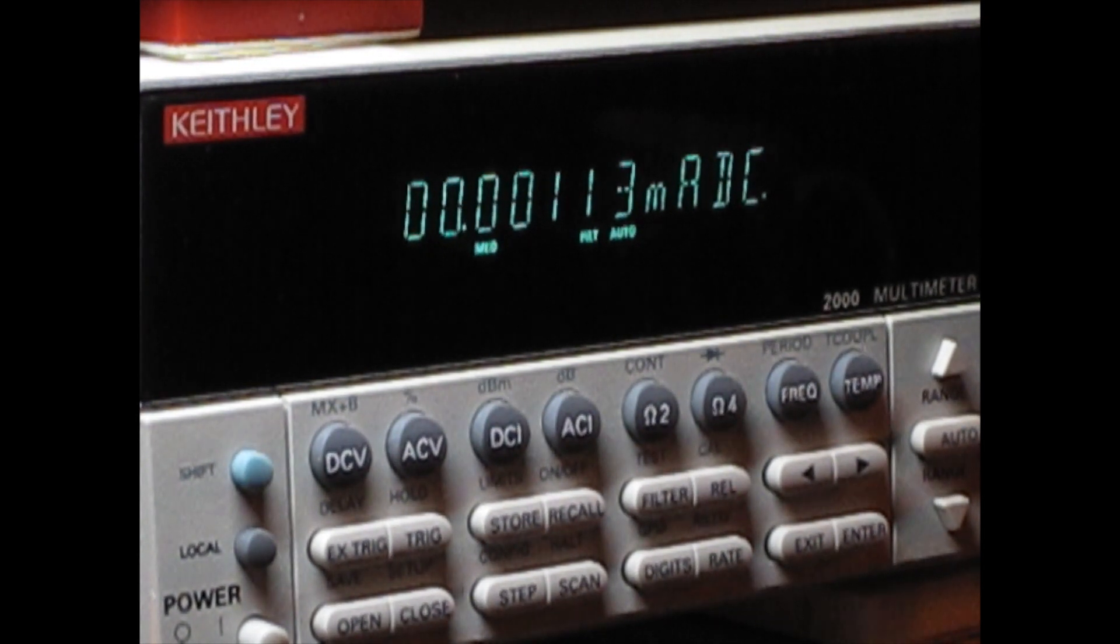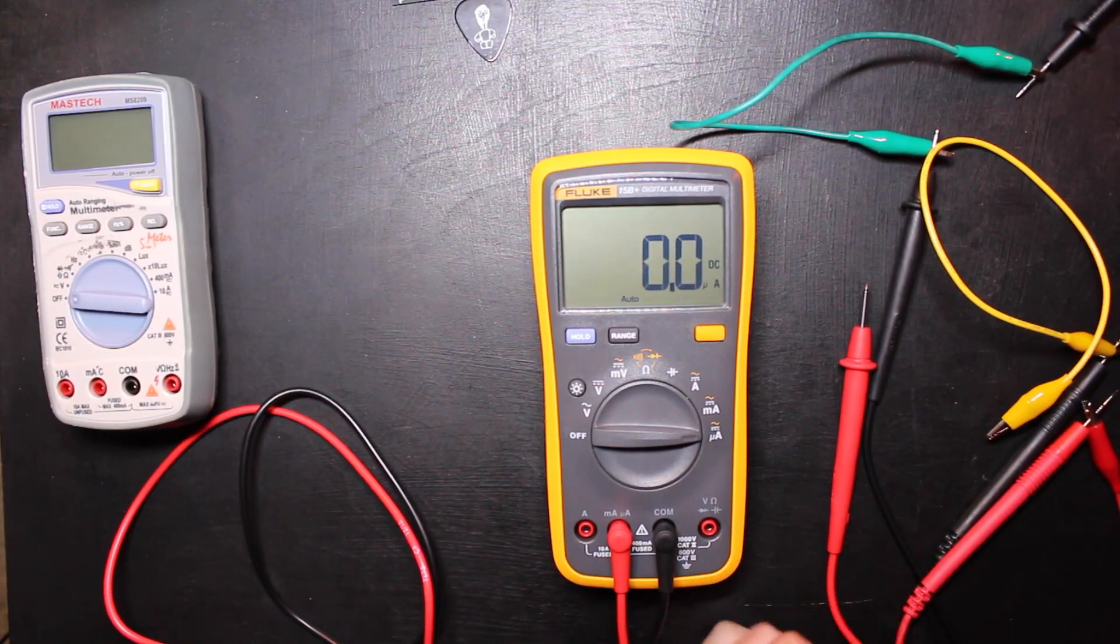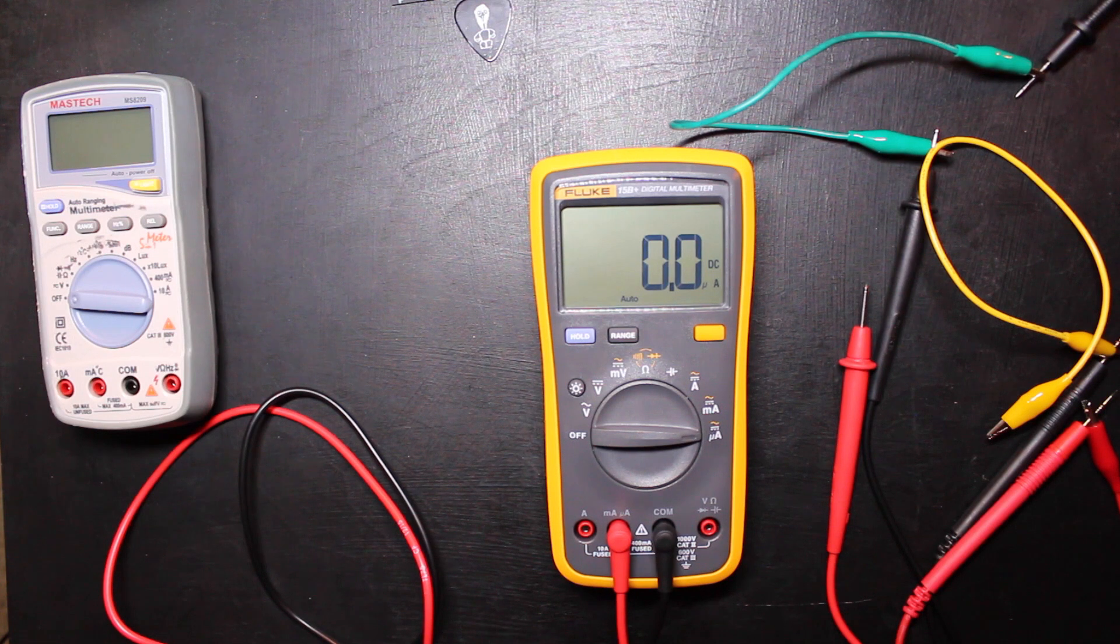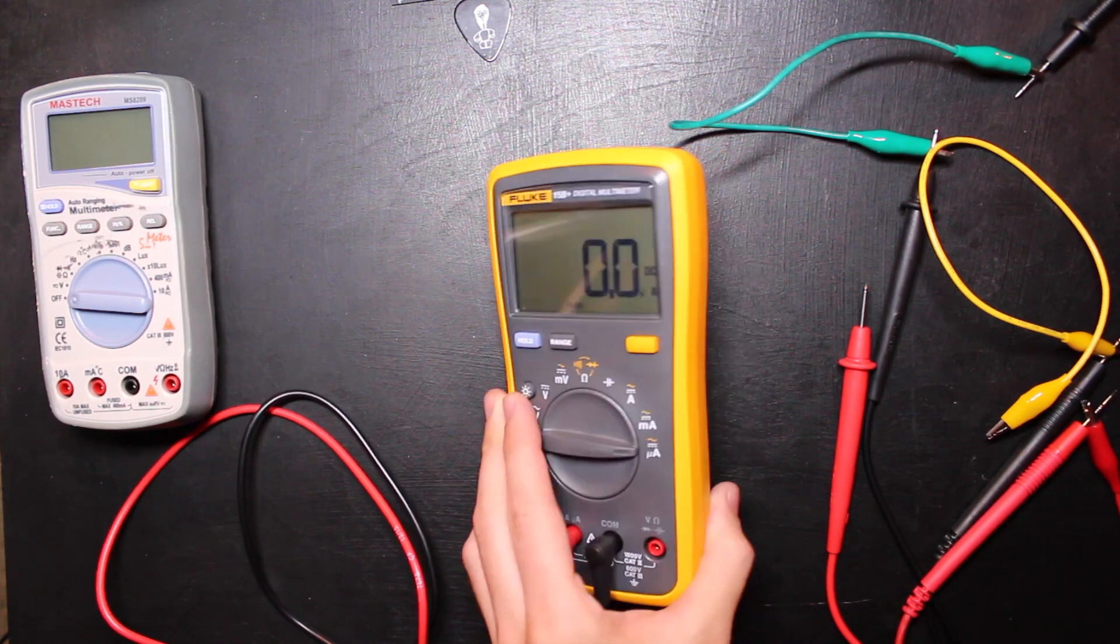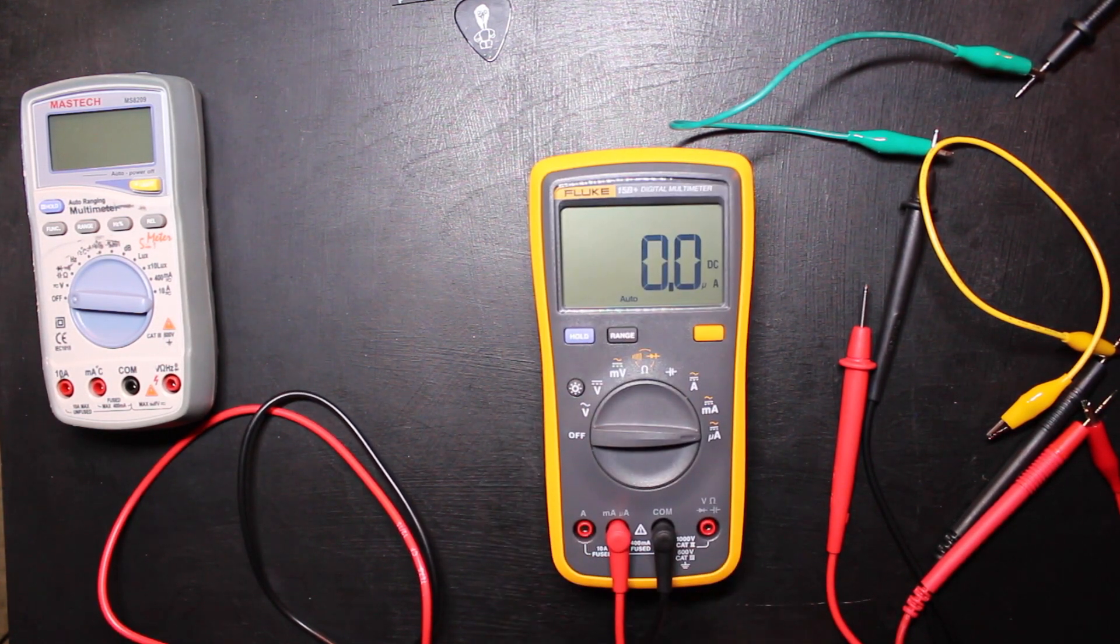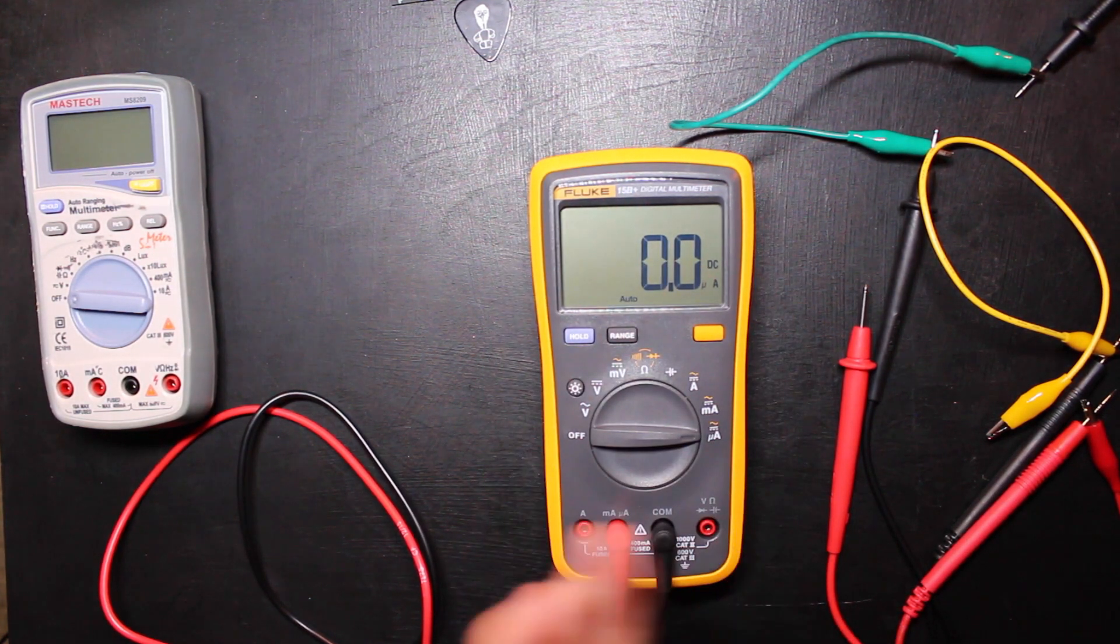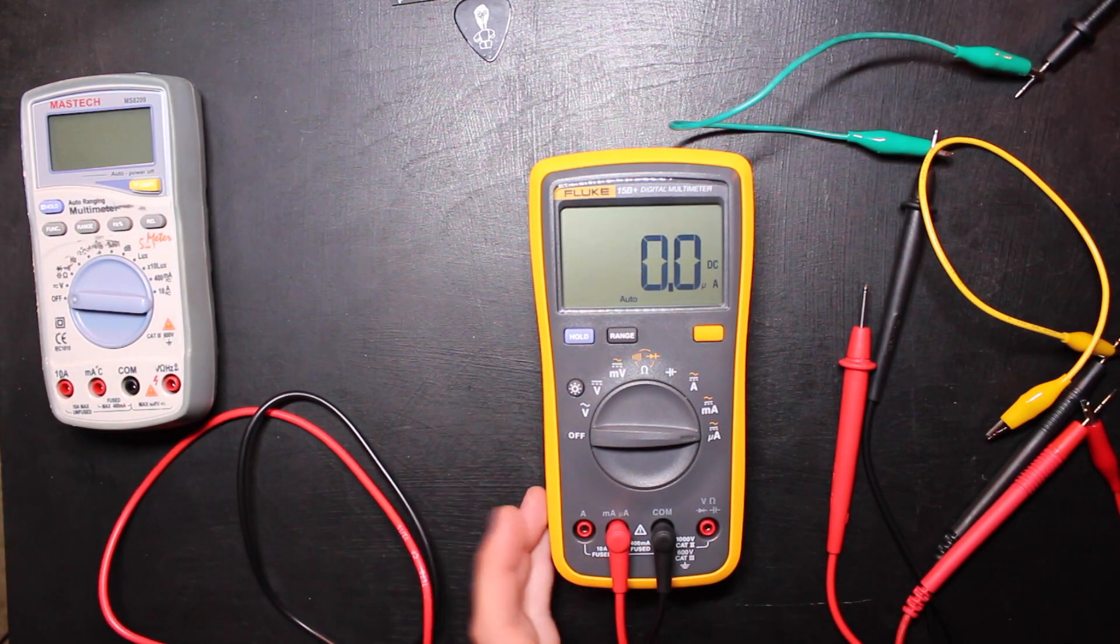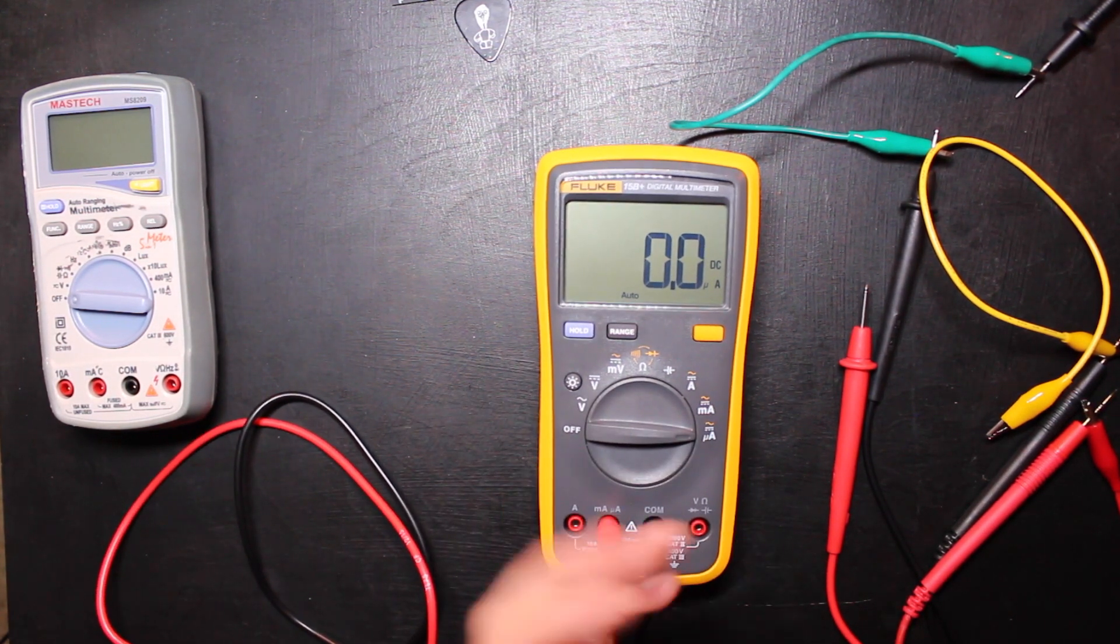So yeah, getting down to one microamp is going to be more than what I really was expecting to be able to measure with an $80 Fluke meter. So I'm extremely impressed with this. Obviously I didn't get into AC voltage, current, I didn't get into measuring ohms or the capacitance scale or anything like that.